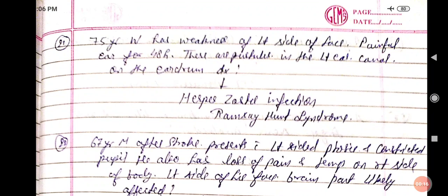A 75-year-old woman has weakness of the left side of face, painful ear for 48 hours, and pustules in the left ear on the eardrum. Left-sided facial weakness, painful ear, and pustules in the left ear — this is a diagnosis of herpes zoster infection, and clinically represents Ramsay-Hunt syndrome.